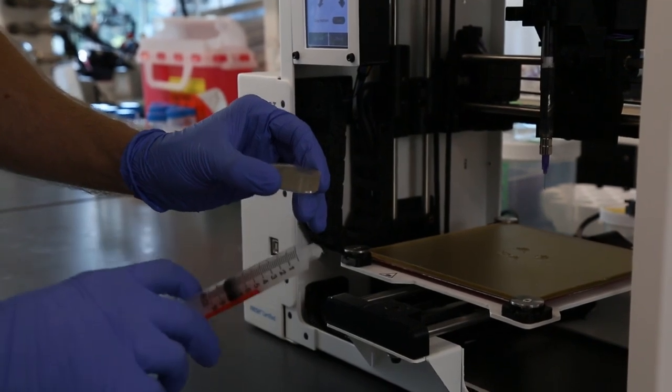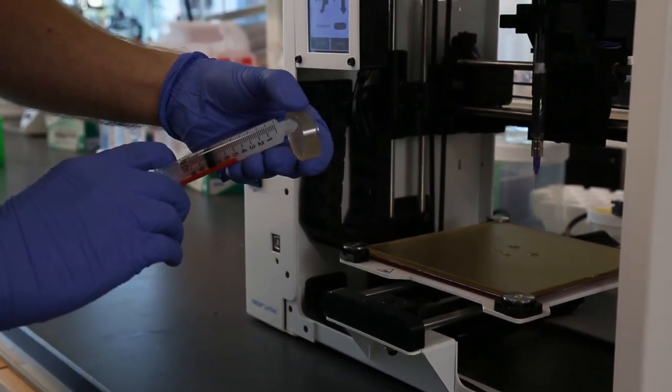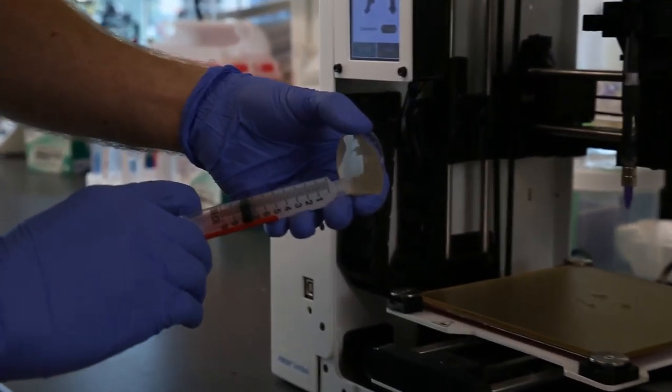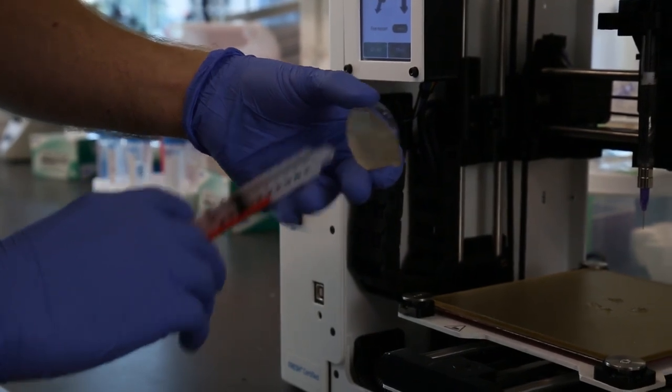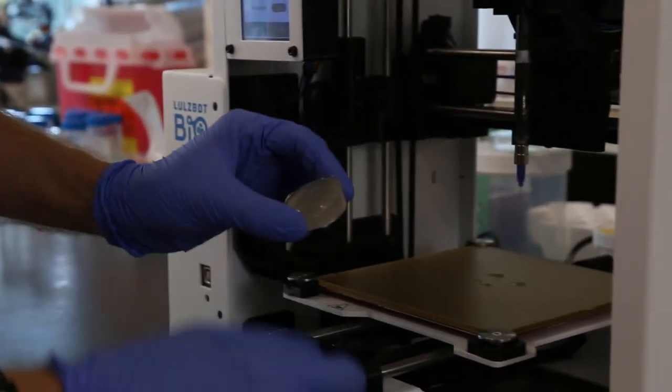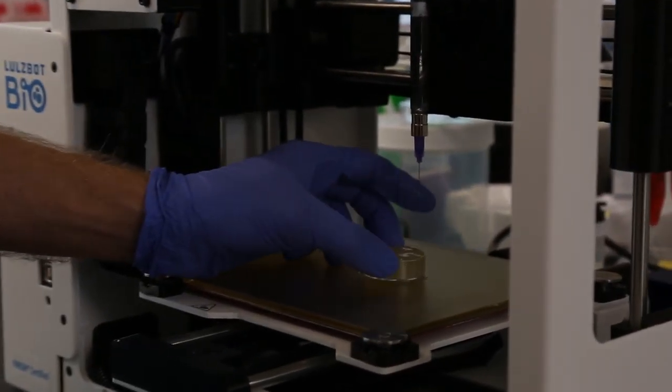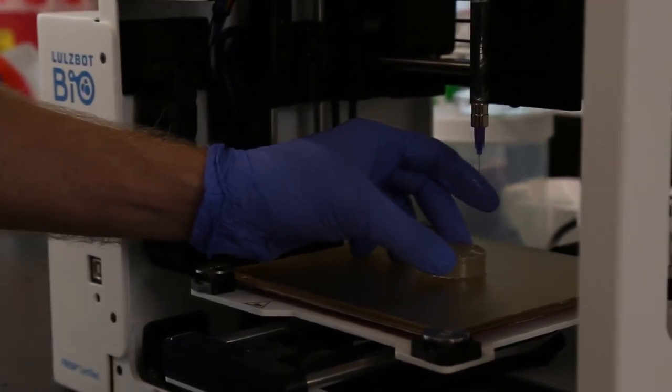I'm gonna add a little bit of vacuum grease, which is from Dow Corning. I like to put three little dollops on here, and all this does is just ensure that nothing is going to be moving around on the print bed during the process. Then just place that on the print bed.